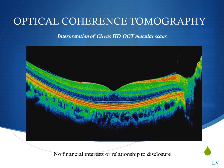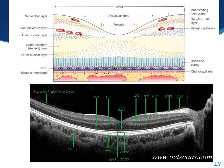This is an introduction on how to interpret Cirrus HD OCT macular scans. It's important to review the anatomy of the foveal and macular regions and to identify if any of these layers are missing or thickened.